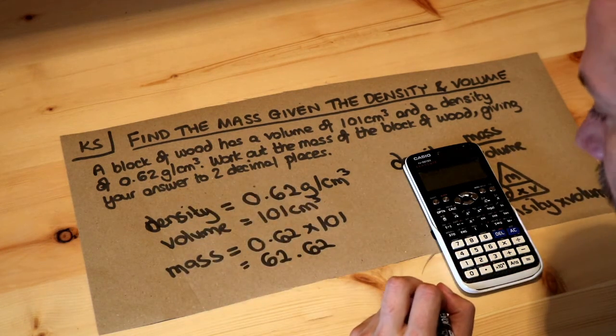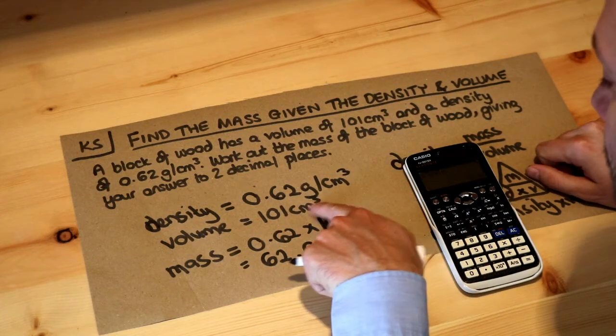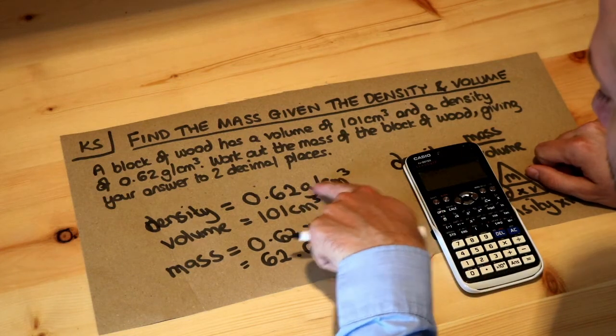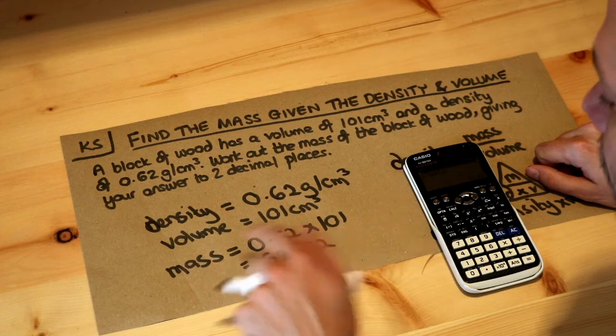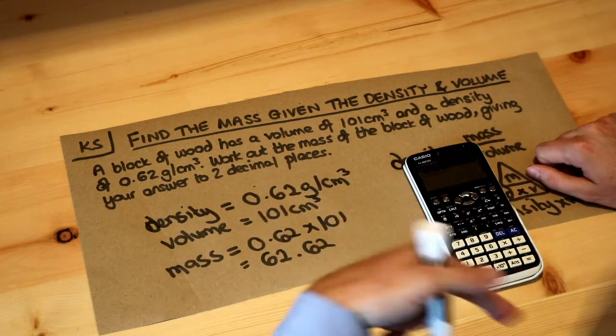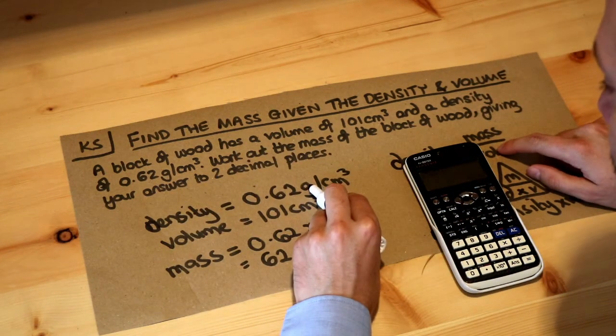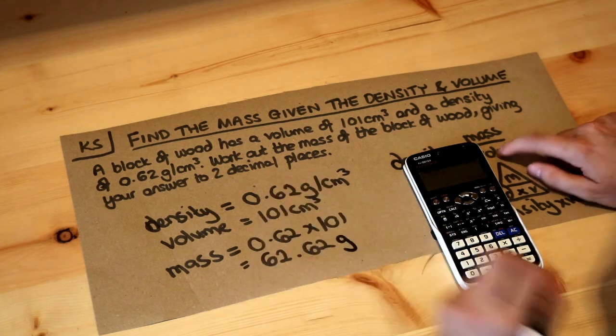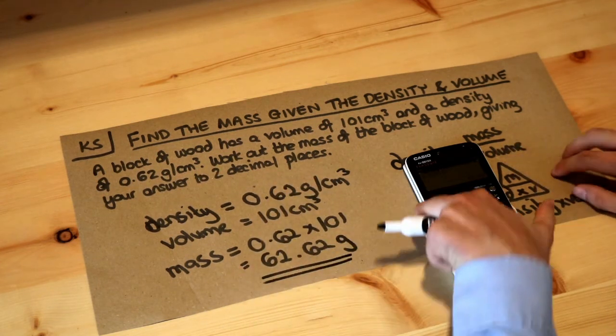Now what's the unit going to be? Well, we use centimeters cubed here and we've got centimeters cubed here and grams. Now mass would be in grams or kilograms—those are the units of mass—and we can see we use grams here, so that's going to be in grams, and that's the final answer.